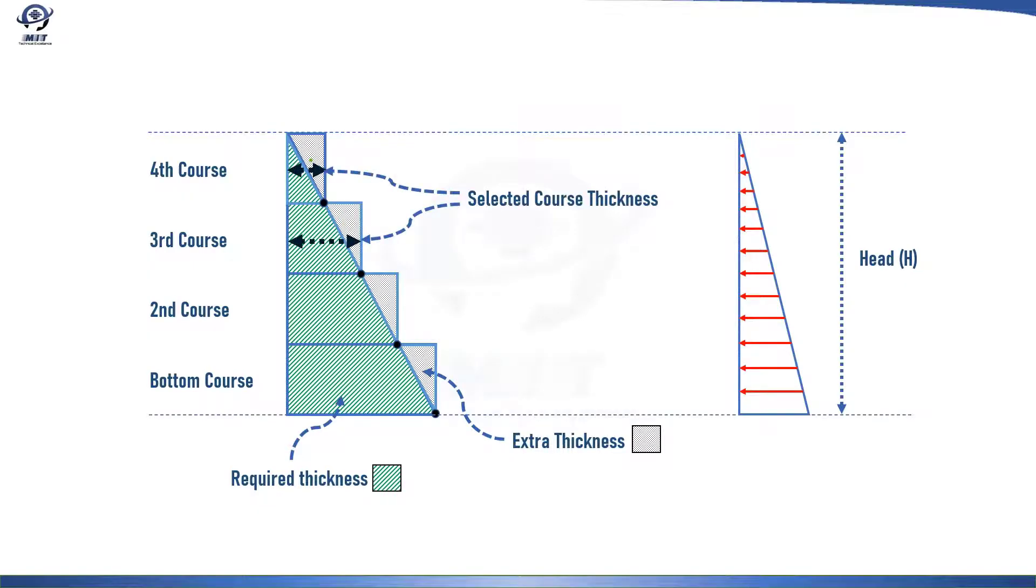API 650 tank has two methods for calculating tank shell thickness, namely one foot method and variable point design method. And a comparison between the two will be presented in the latest slide.